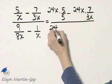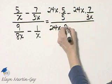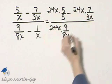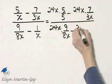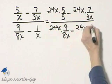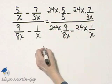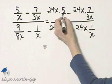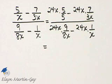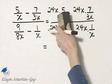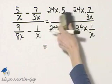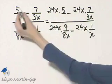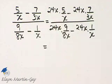I have 24x times 9 over 8x minus 24x times 1 over x. And now let's simplify. One moment there, I wrote 5 over 5. Excuse me, that should be 5 over x. Now let's simplify.